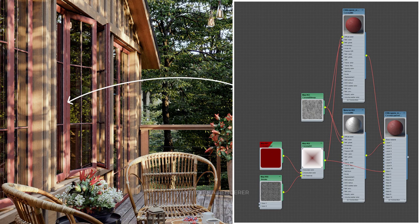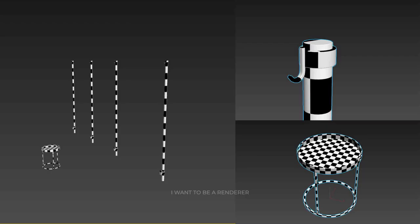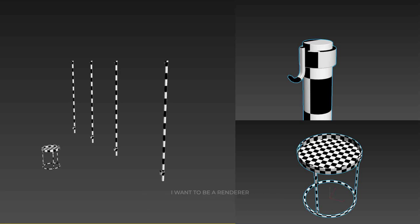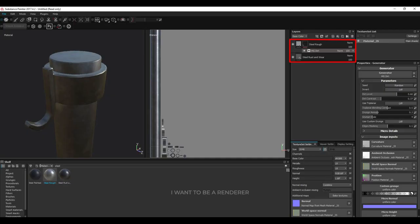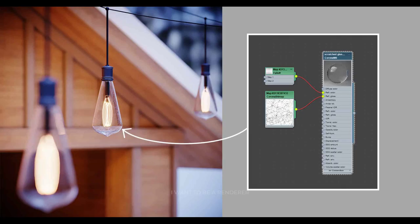They also did the same process with the window and door materials. To add more detail, they did the unwrap on some models and took them to Substance Painter. Substance Painter and its tools are great for making the materials more natural. In addition, they improved some materials by adding textures to their glossiness channels.